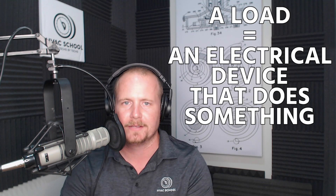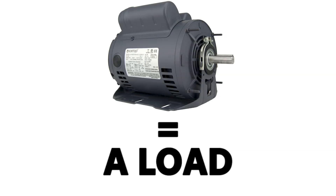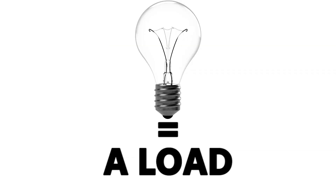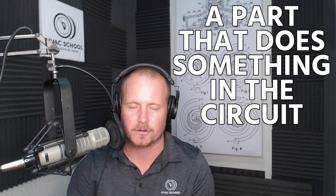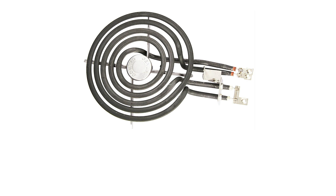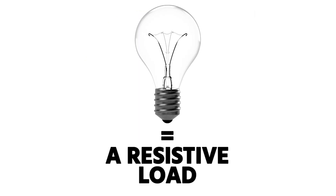A load is an electrical device that does something — a motor is a load, or a light bulb is a load. It's the part that actually does something in a circuit. With something simple like an oven coil, that is a resistive load, and a light bulb is a resistive load. Even those can be difficult to apply Ohm's Law to.